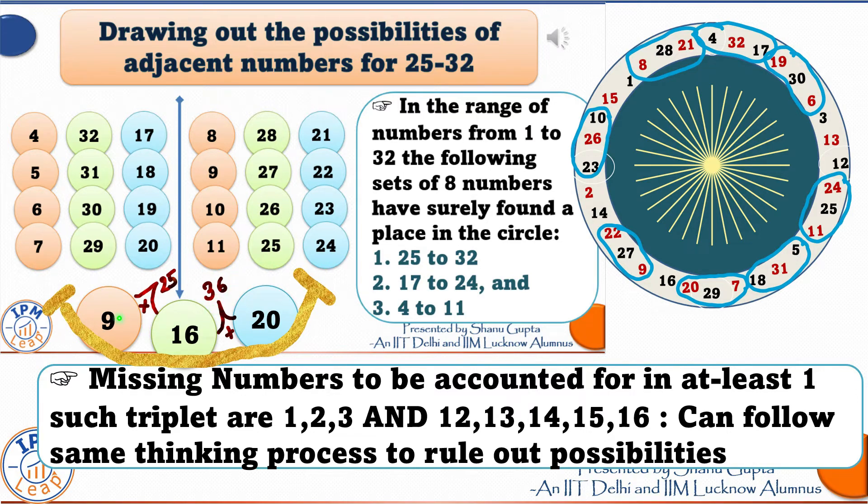9 plus 16 is 25. So, before 16 comes 9. And 16 plus 20 is 36. So, after 16 comes 20. We have just calculated a very important triplet on our circle. 9, 16 and 20. See, there it is.